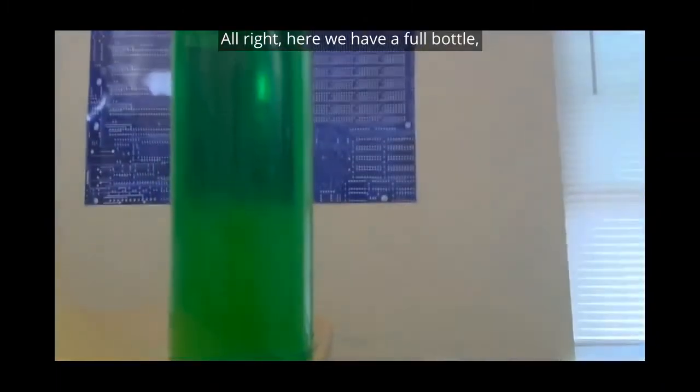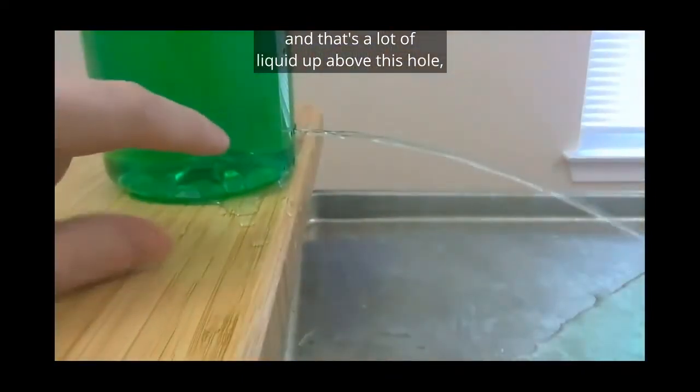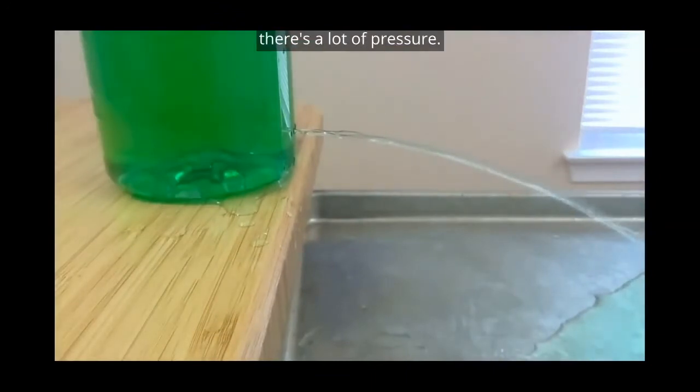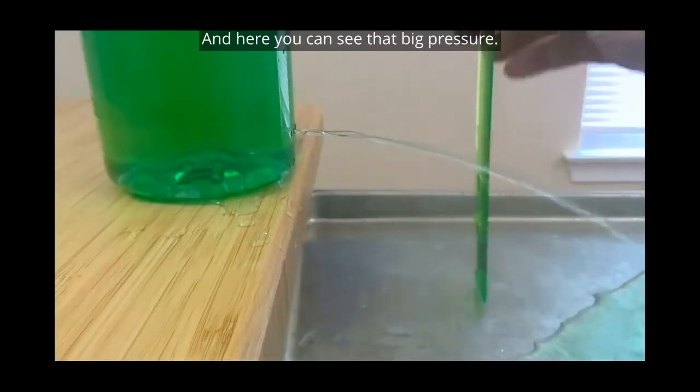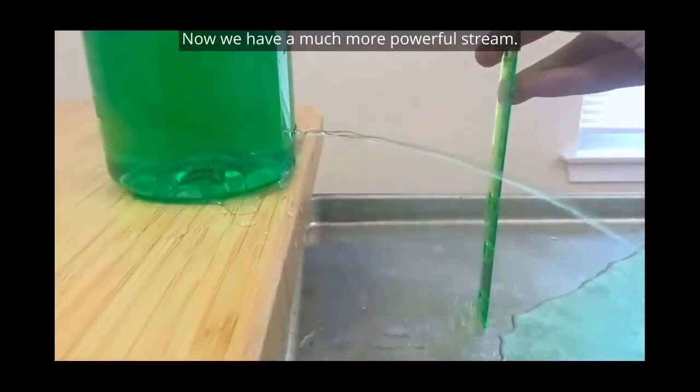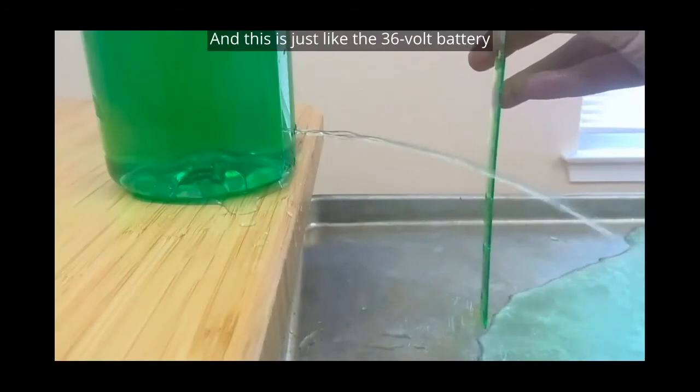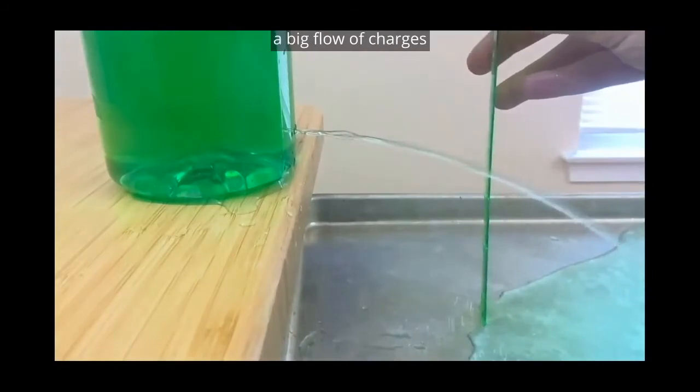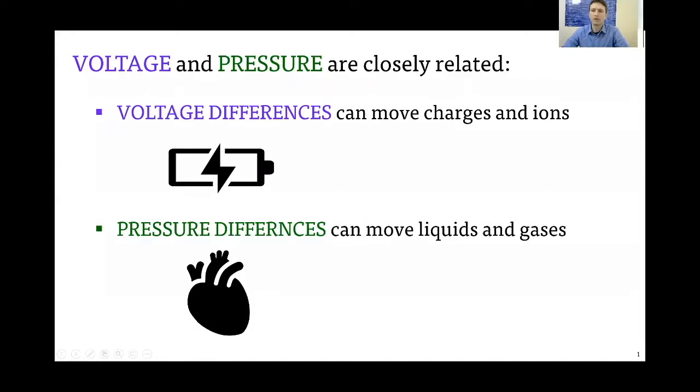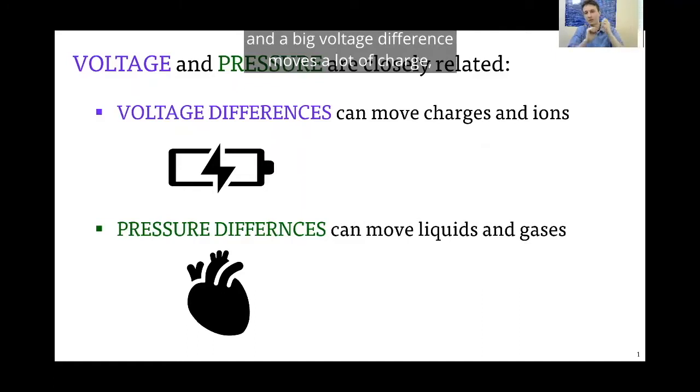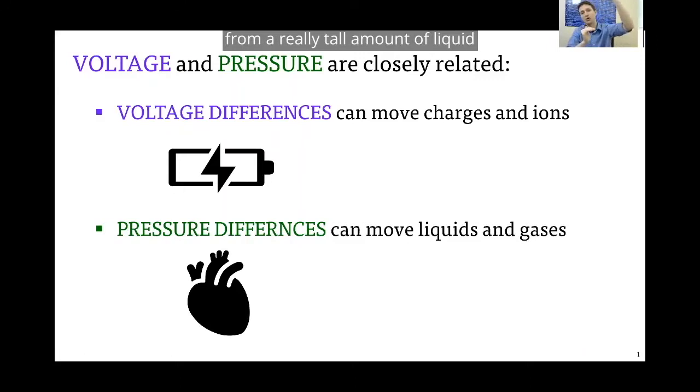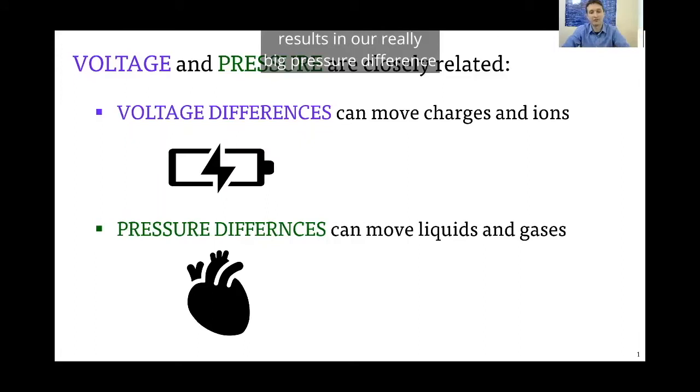All right, here we have a full bottle—a lot of liquid above this hole. Just like diving to the deep end of a swimming pool, there's a lot of pressure. You can feel it on your ears, and here you can see that big pressure. So instead of a really weak stream that was falling straight down, now we have a much more powerful stream. This is just like the 36 volt battery creating a big flow of electrons, a big flow of charges that we could see as sparks. A voltage difference can move charges and ions—a little voltage difference moves a little bit of charge, like an orangish glow. A big voltage difference moves a lot of charge, like a bright white spark. The same thing's true with pressure differences: a little pressure difference created a little trickle, but a big pressure difference resulted in a really strong stream.